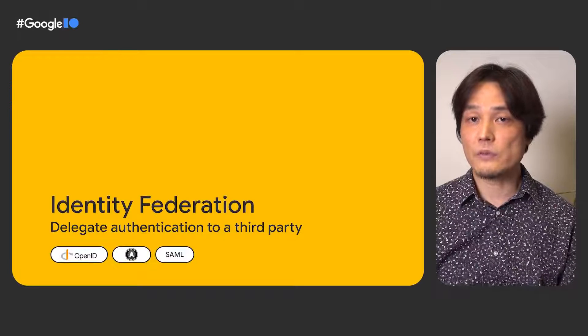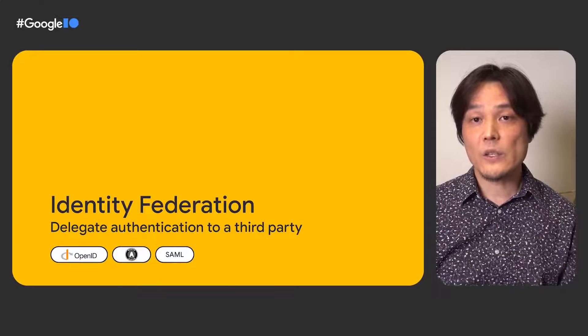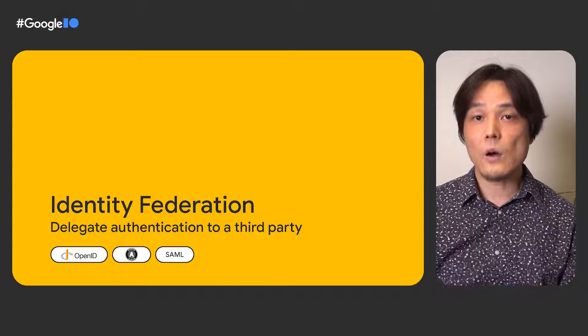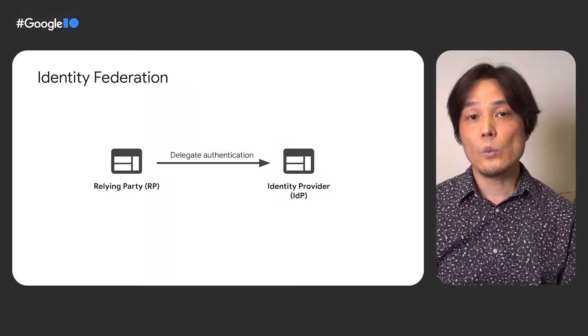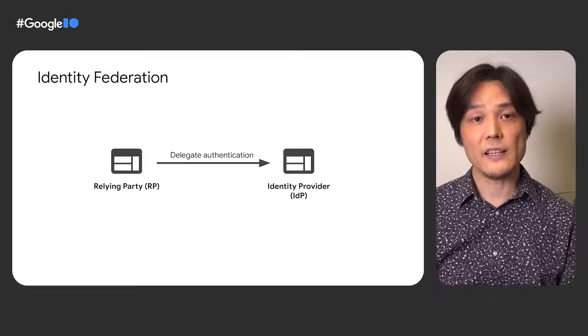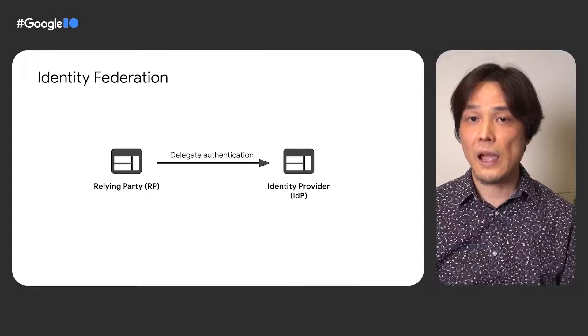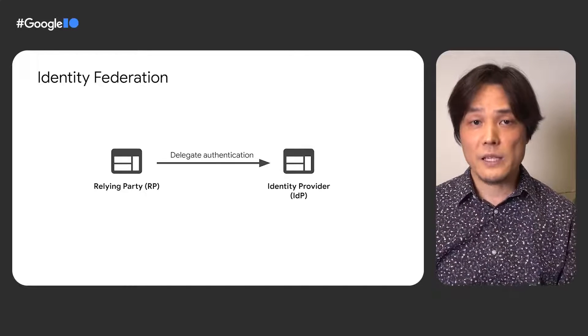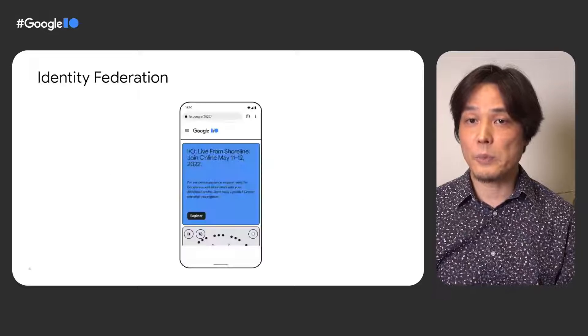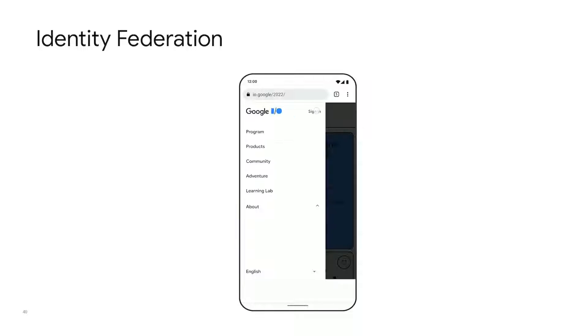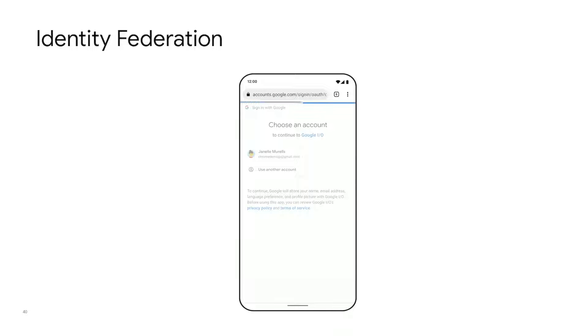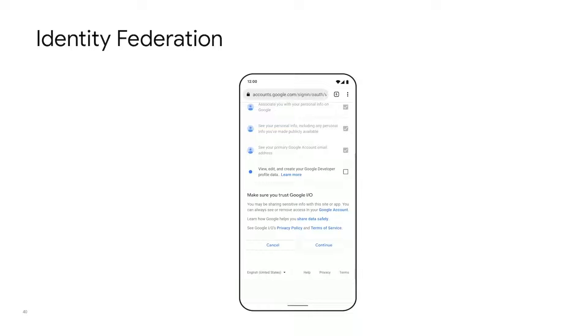Another secure authentication option without adding a new password is Identity Federation, which consists of standard protocols such as OpenID Connect, OAuth, or SAML. With Identity Federation, a Relying Party, or RP, can delegate its authentication mechanism for user sign-in to an identity provider, or IDP. The IDP provides an authentication mechanism to a third party. For example, a lot of you must have signed into a non-Google website using your Google account. That is exactly how Identity Federation works. Identity Federation is great for users who don't want to create and remember a new password. But some people may be concerned that IDPs can learn which RPs the user visits, or they wonder if cross-site cookies can be used for tracking.